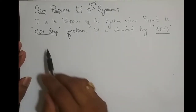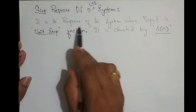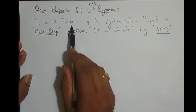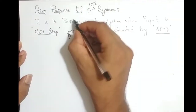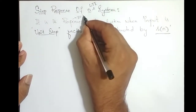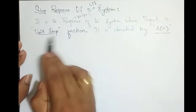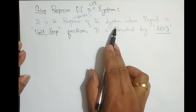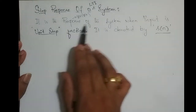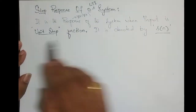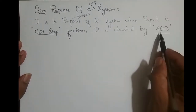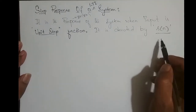Step response is defined as the response of the system — that is, the output y(t) or y(n) — when the input to the system is a unit step function. It is denoted by small letter s(n).